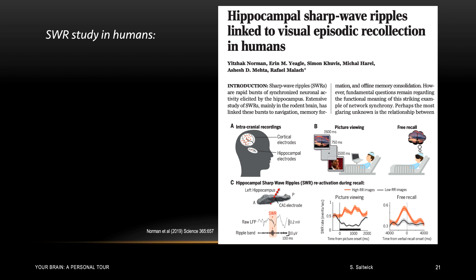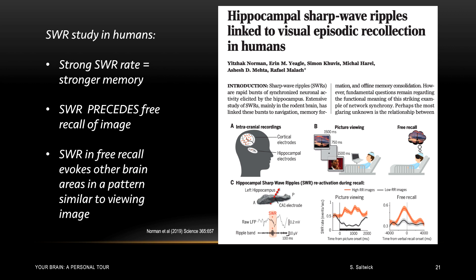There were three major findings. First, stronger rates of sharp wave ripples were associated with stronger memories. High rates of ripples meant high rates of recall. Second, a sharp wave ripple usually preceded the recall of a picture. In other words, the retrieval of a memory was preceded by a sharp wave ripple. And finally, the sharp wave ripple in a free recall activated other areas of the brain in a pattern similar to those areas of the brain that were active when the picture was actually viewed.